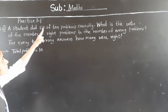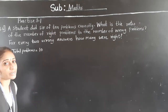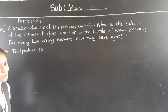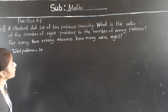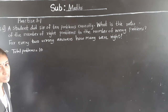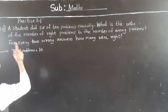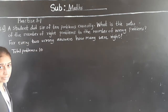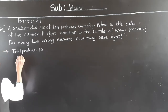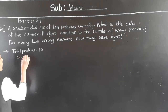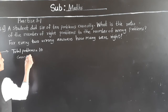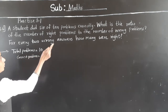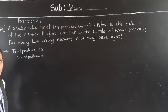A student did 6 of 10 problems correctly. How many problems did the student do correctly? 6 problems. Correct problems are 6. So wrong problems: from 10 total, subtract 6 correct — wrong problems are 4.